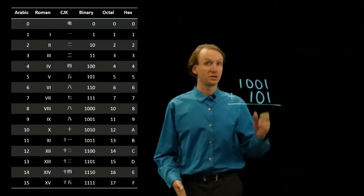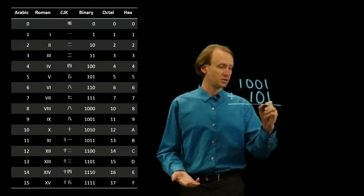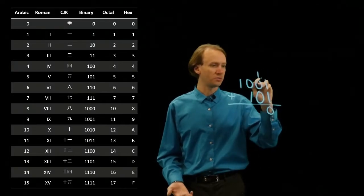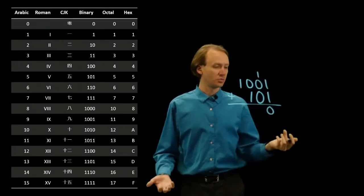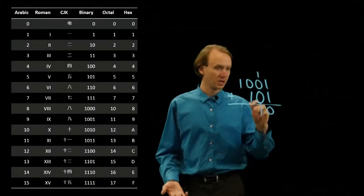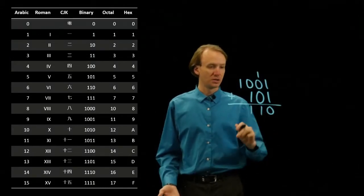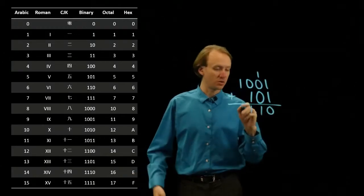1 plus 1 in binary gives me 10, so I'll write down a 0 and carry a 1. Now I have 1 plus 0 plus 0, which is 1. Then I have 0 plus 1, which is also 1. And then 1 plus 0 gives me 1.